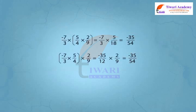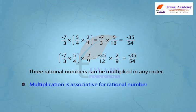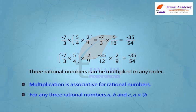Three rational numbers can be multiplied in any order. Therefore, rational numbers are associative under multiplication. That is, for any three rational numbers a, b, and c: a into (b into c) is equal to (a into b) into c.